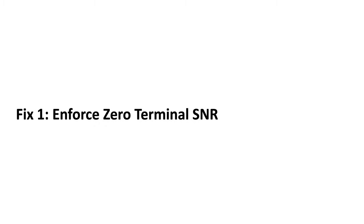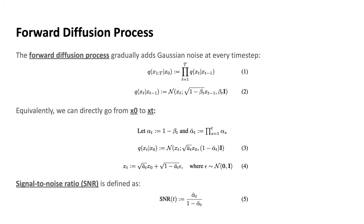Fix number one: enforce zero terminal SNR. The forward diffusion process gradually adds Gaussian noise at every time step following equation 2 — that's how we transform from x_{t-1} to x_t. Because we're adding pure Gaussian noise, we can derive a closed-form solution in equation 3 to directly transform from x_0 to x_t, equivalently written as equation 4, a combination of the sample x_0 and the epsilon noise. Signal-to-noise ratio SNR is defined as equation 5, which goes to infinity for pure signal and to zero for pure noise.